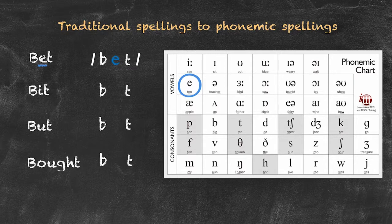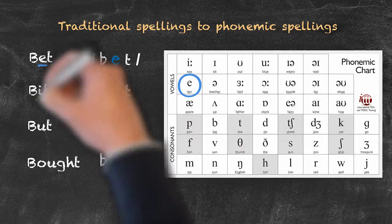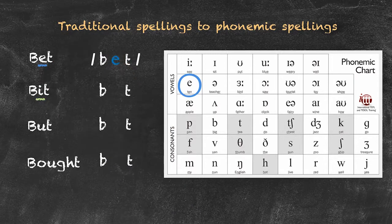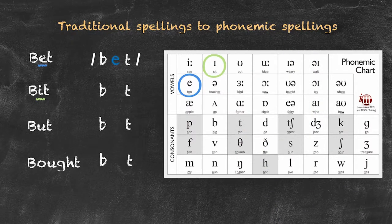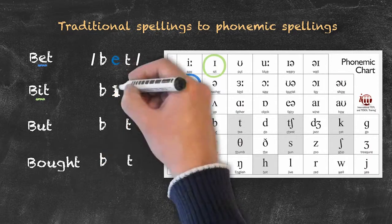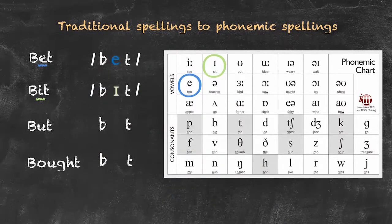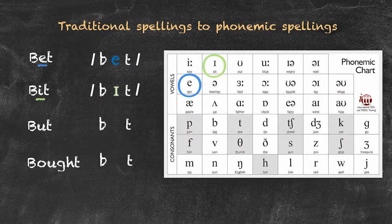Now let's take a look at 'bit.' We look at our chart and we see that this symbol represents the 'eh' sound, and that resembles a capital I — not a lowercase i, but a capital I — and so we've arrived at 'bit.'